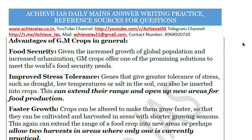GM crops also improve stress tolerance. They can be engineered to tolerate drought, low temperature, or saline conditions, expanding cultivation into new regions. For example, rice requires a lot of water and is not grown in Rajasthan, but by genetically modifying rice seeds to be drought resistant, they could be planted there — extending the range and opening up new areas for food production.